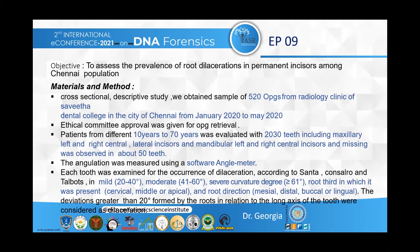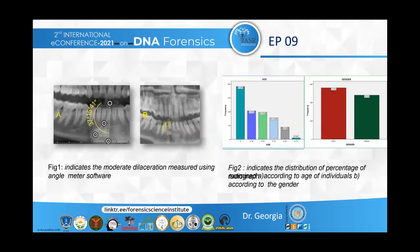According to Santha, Cancelro, and Talbott's previous study, the classification of the dilacerated root was given as mild for 20 to 40 degrees, moderate for 41 to 60 degrees, and severe for curvature greater than 61 degrees. The root third was segregated as mesial third, apical third, and middle third. The root direction was separated into mesial and distal direction. A deviation greater than 20 degrees for the root in relation to the long axis was considered as dilaceration.